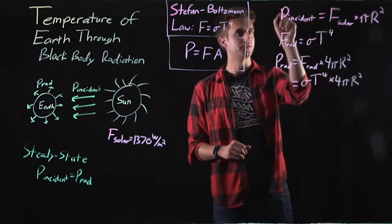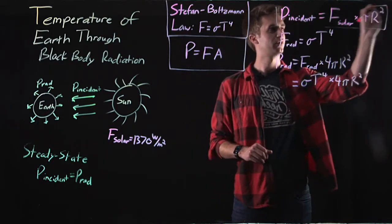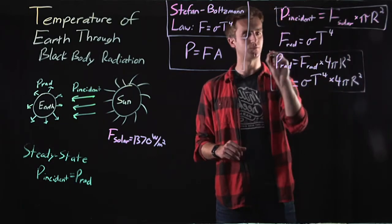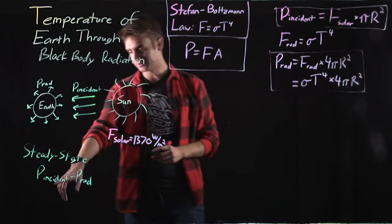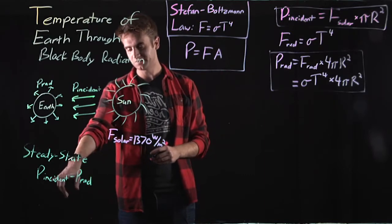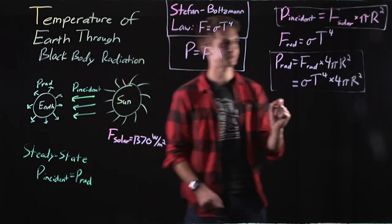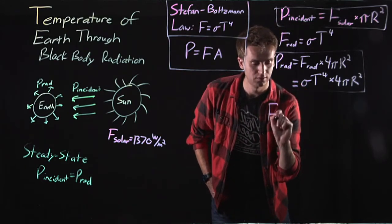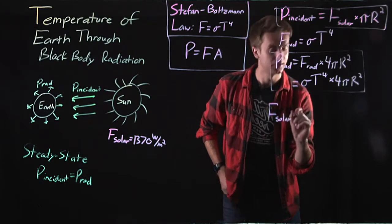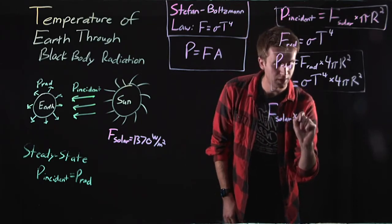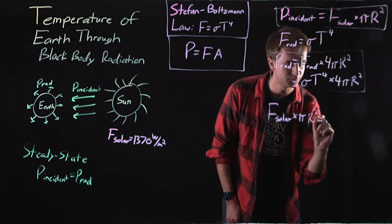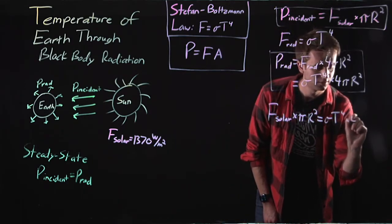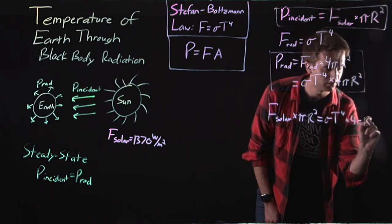So now we have an equation for the incident power, and we have an equation for the radiative power. So let's come back over here to this steady state equation. P incident must be equal to P radiation. So F solar times pi r squared must be equal to sigma T to the fourth times 4 pi r squared.